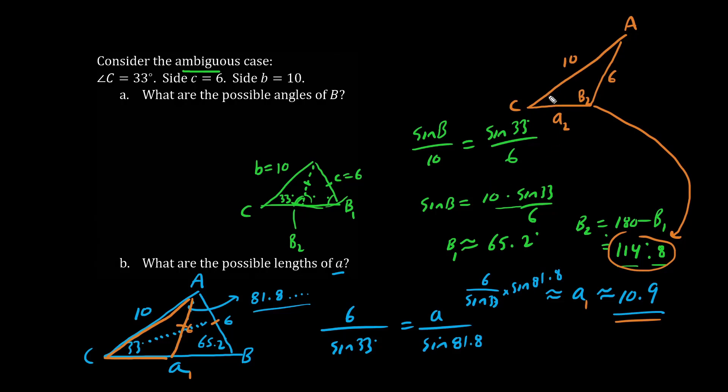And we know this angle C is 33 degrees. So let's play catch again with side length 6 and 33 degrees. Using the sine law, we have 6 over sine 33 equals the side length, which is A2 over this mystery angle up here. Now to figure out this mystery angle, we'll call it theta. We subtract 180 minus 33 minus B2, which is 114.8. So theta is approximately 32.2 degrees.